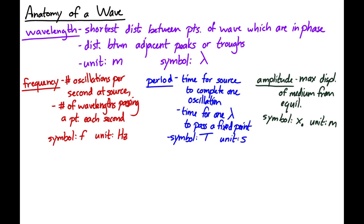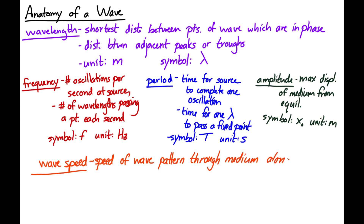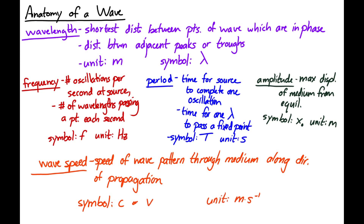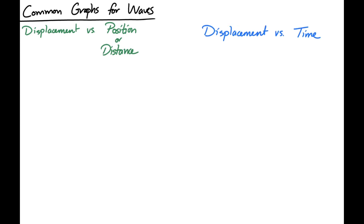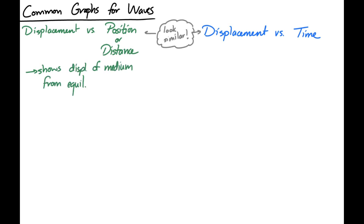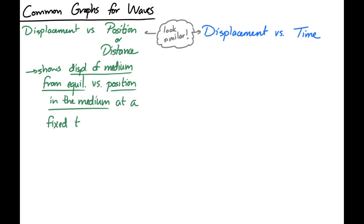Wave speed is the speed of the wave pattern through the medium along the direction of propagation. The symbol used for wave speed is either c or v, and the unit is meters per second. There are two common ways to graph waves: displacement versus position (sometimes called displacement versus distance) and displacement versus time. The displacement versus position graph shows the displacement of the medium from equilibrium at one fixed instant in time — like a snapshot of the wave.